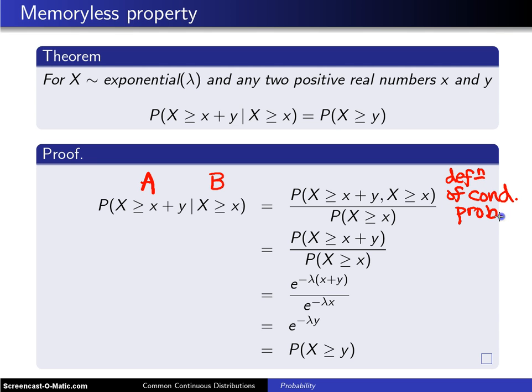Now, the next step is true by what I would call equivalent events, which is to say that if the random variable X is greater than or equal to x plus y, then it's always the case that X is greater than or equal to x because x and y are both positive real numbers. So this second event here is superfluous, so it can be simply removed. And this longer event here is equivalent to this shorter event.